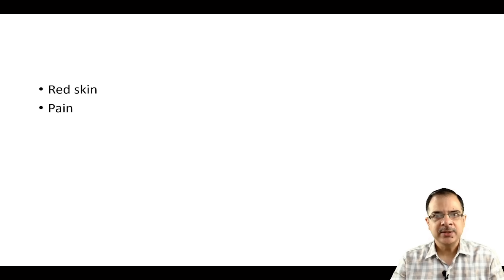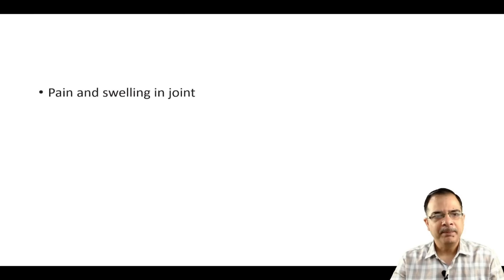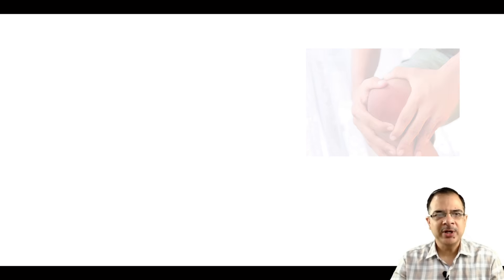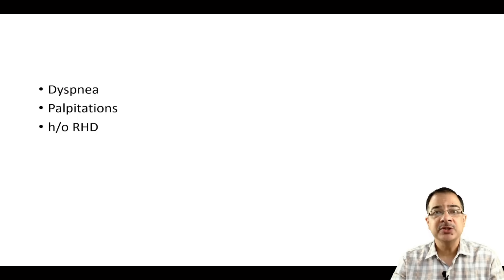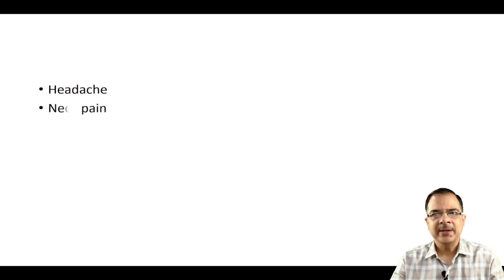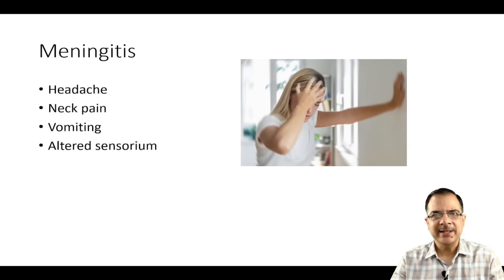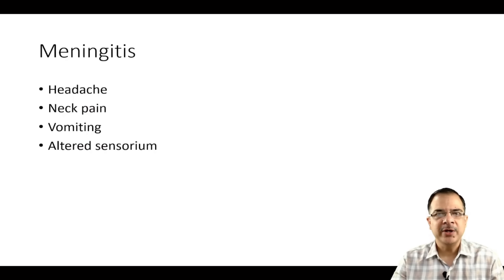Red skin, swelling in the skin, pain, abscess, or boil are suggestive of skin and soft tissue infection. Pain and swelling in the joints indicate bone and joint infection. Dyspnea and palpitations with a history of rheumatic or structural heart disease are suggestive of endocarditis. Headache, neck pain, vomiting, along with altered sensorium are suggestive of meningitis.